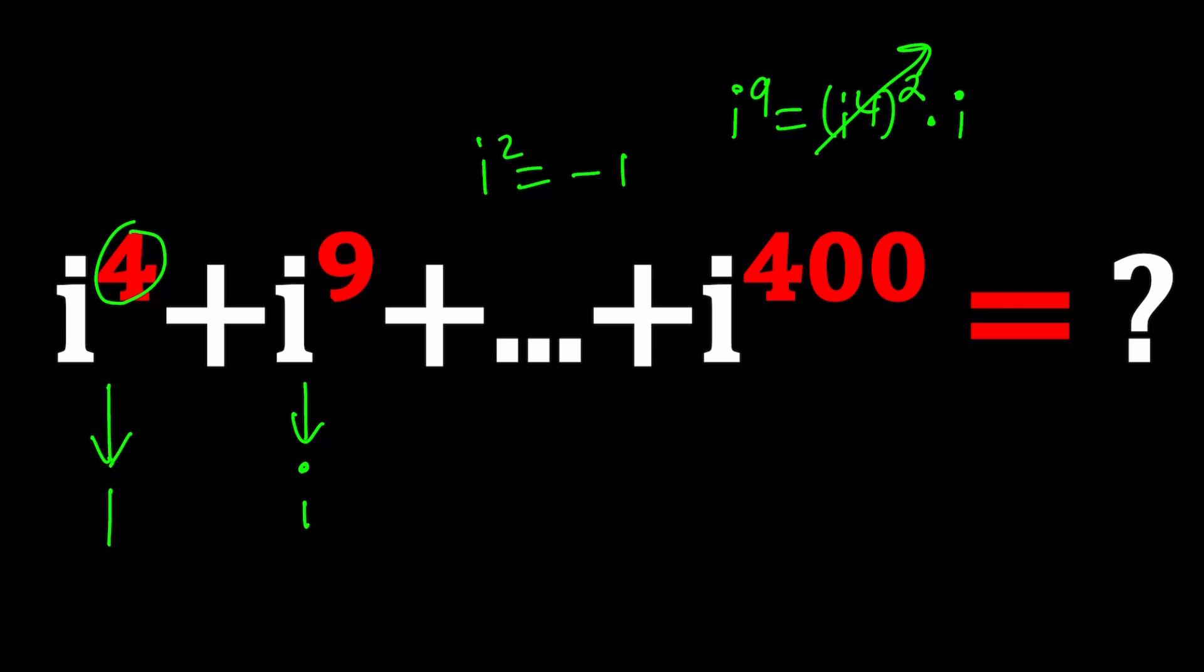What about the next one? What about i to the 16th? i to the 16th, since 4 is a factor of 16, we can kind of write it as i to the fourth to the fourth, kind of double fours. And this gives us 1 again.